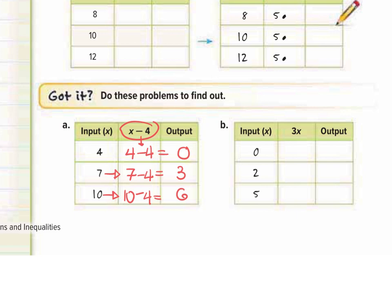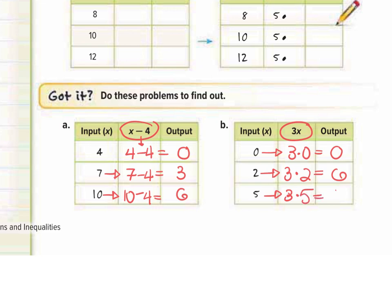For Part B, we have new inputs and a new function rule, and we want to find the outputs. Our first input is 0: 3 times 0 gives an output of 0. Next input is 2: 3 times 2 gives an output of 6. Then input 5: 3 times 5 gives an output of 15. So these are our outputs.